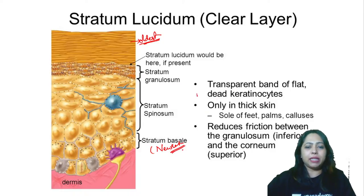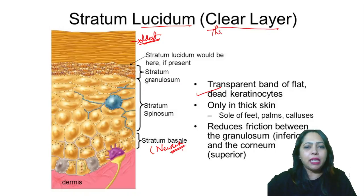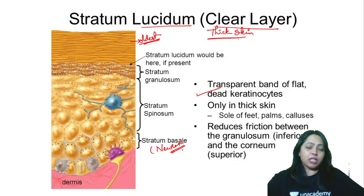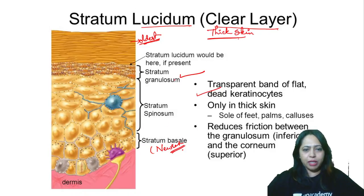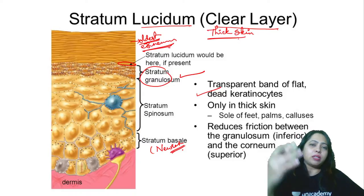The lucidum layer is a transparent band of flat, dead keratinocytes. It is seen only in the case of thick skin — the sole of the foot and palm of the hands. Its function is to reduce the friction between the granulosum layer and the stratum corneum layer on top. So the lucidum is sandwiched between granulosum and corneum, reducing friction between them.